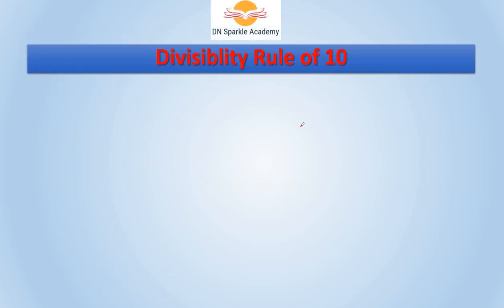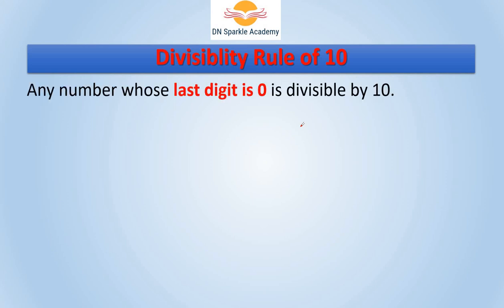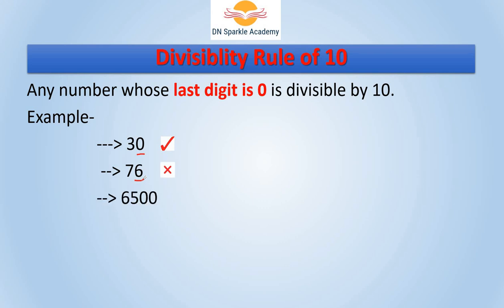The next is the divisibility rule of 10. The rule is: any number whose last digit is 0 is divisible by 10. For example, 30 — last digit is 0, so 30 is divisible by 10. If the last digit is non-zero, the number is not divisible by 10. We can apply this check to any number.